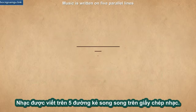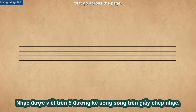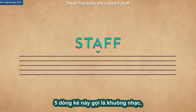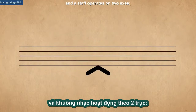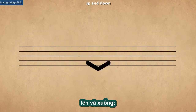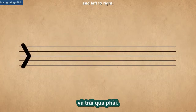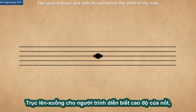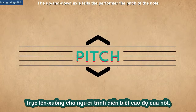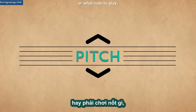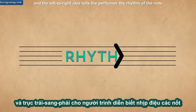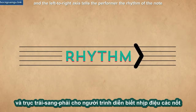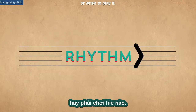Music is written on five parallel lines that go across the page. These five lines are called a staff, and a staff operates on two axes: up and down, and left to right. The up and down axis tells the performer the pitch of the note, or what note to play, and the left to right axis tells the performer the rhythm of the note, or when to play it.